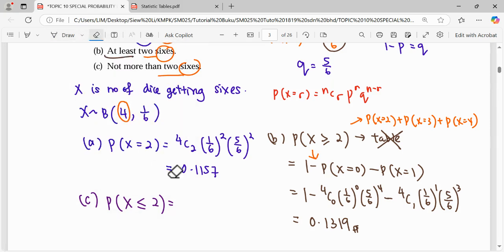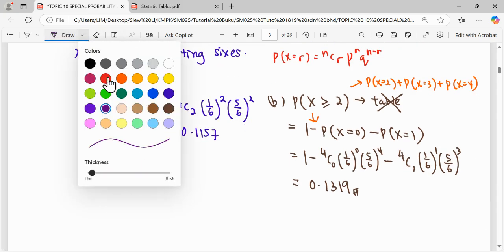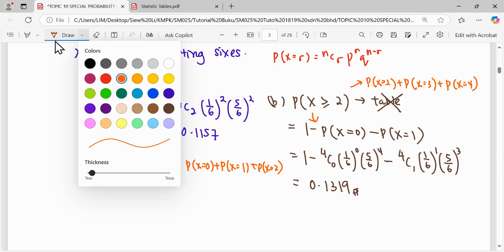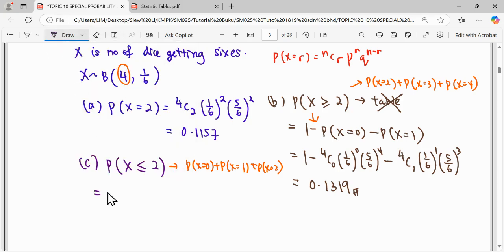If you want less than or equal to, I also have two options to calculate. Either you calculate one by one, which means you calculate P of X equals zero, P of X equals one, and P of X equals two. Or we can do it the opposite way, which is one minus. I'll take the simpler working with less working. One minus random variable three and random variable four. We have four dice, so maximum will go until four only. I'll do the opposite method.